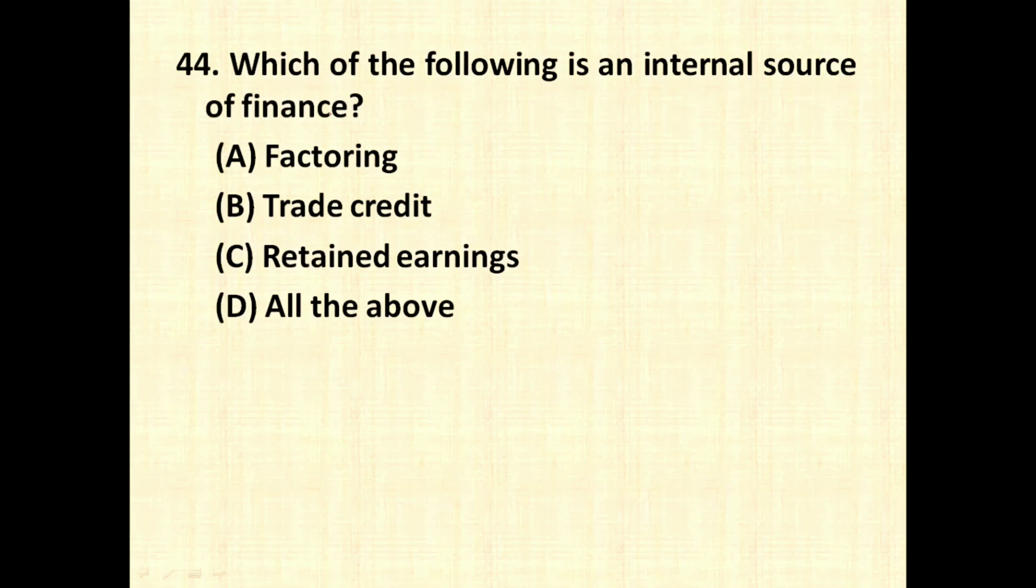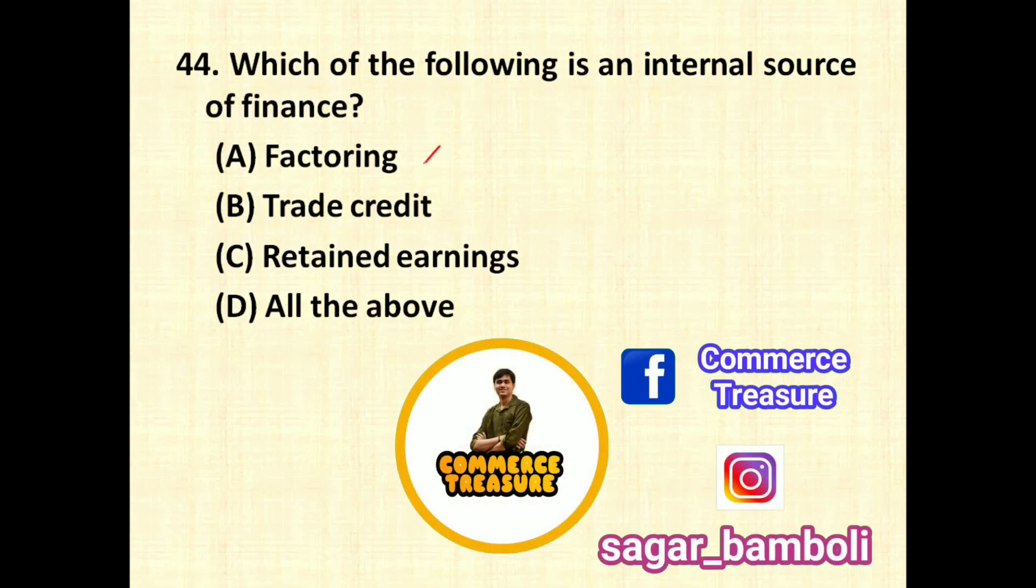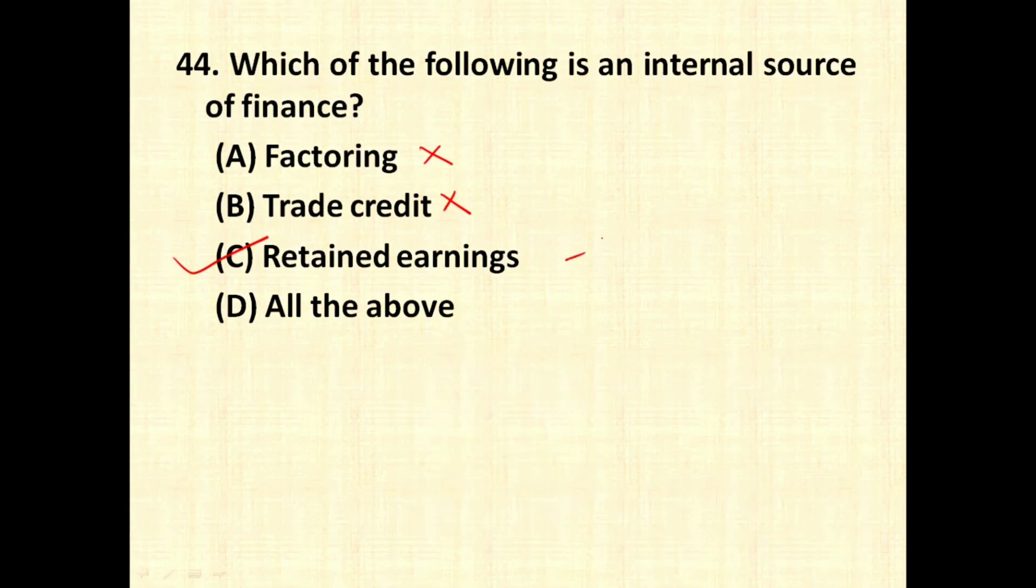Which of the following is an internal source of finance? Factoring, no. Trade credit, no. Retained earnings, yes. So retained earnings is nothing but it is that part of profit which you had not shared as dividend to the shareholders. You retain, you keep it with yourself for future growth purpose. So it is an internal source of finance.